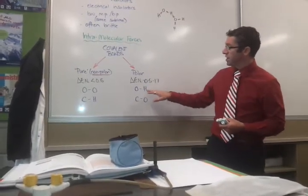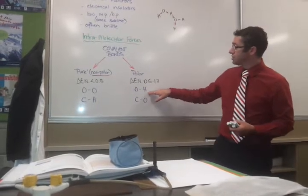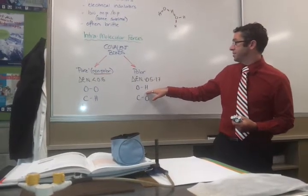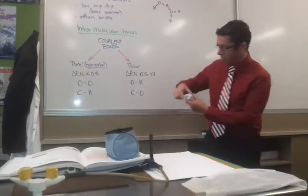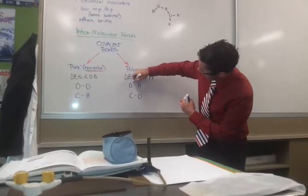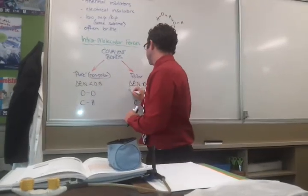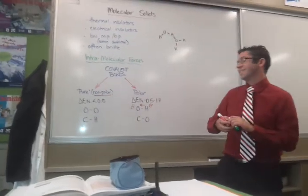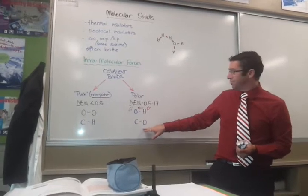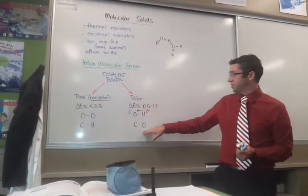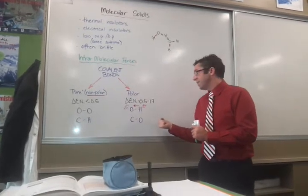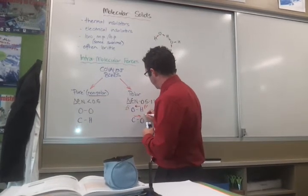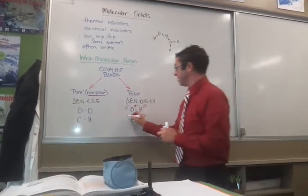So if we look at the example right here, oxygen is 3.5, hydrogen is 2.1. So 3.5 minus 2.1 is going to be 1.4, and so you're going to have a strong pull in this direction here, creating a dipole. So you get a slight negative side and a slight positive side here. Same thing is going to happen with carbon and oxygen. Our carbon is 2.5, our oxygen is 3.5. So the oxygen is pulling the electrons in this bond a little bit stronger. So you get a slight negative side there and a slight positive side there.